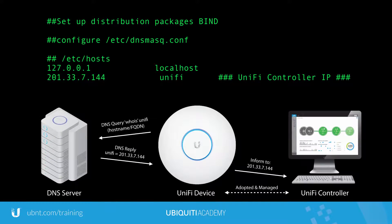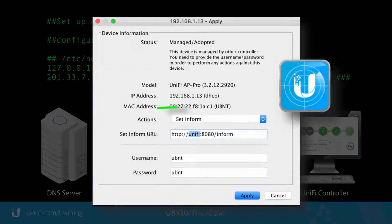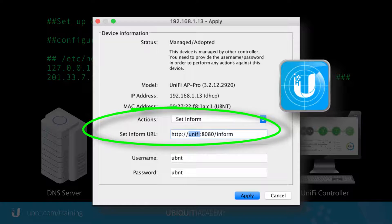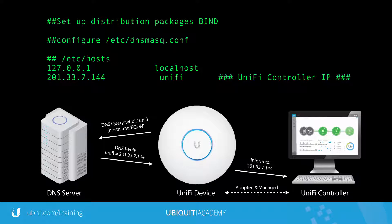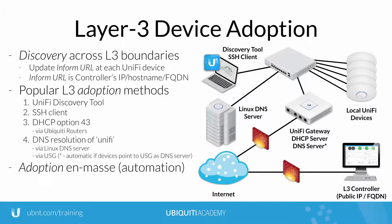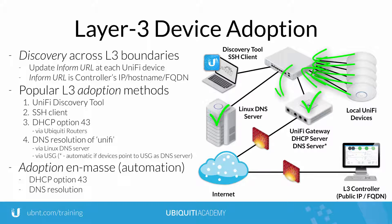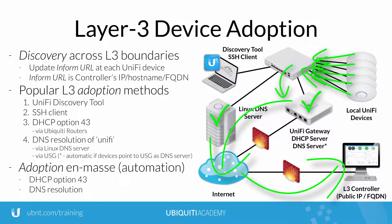Finally, because the default Inform URL includes the hostname "unify", the network DNS server can also be configured to resolve hostname "unify" to the Layer 3 IP of the Unify controller. Among the four methods, DHCP Option 43 and DNS Resolution trigger auto-discovery for adoption en masse, and therefore are very useful for large-scale deployments.